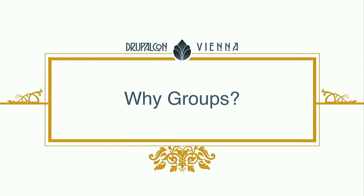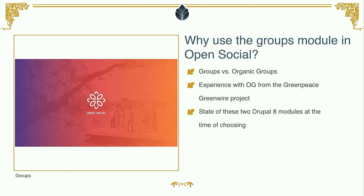Why do we use the group module in OpenSocial? We had experience with organic groups from Drupal 7 for the previous GreenWire project. But at the time we had to make the decision, there was no official release of organic groups for Drupal 8 — and our experience with that interface was not that good. So we thought maybe we should switch to the group module. And it turned out that the architecture was also more in line with how we thought it should be. That's basically why we chose to use the group module.